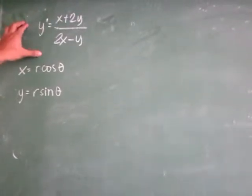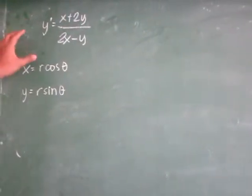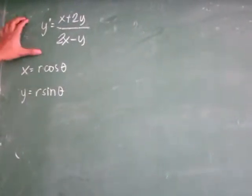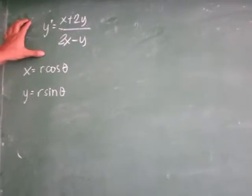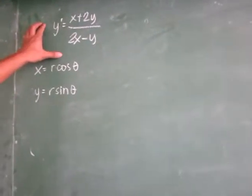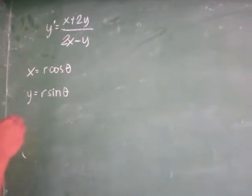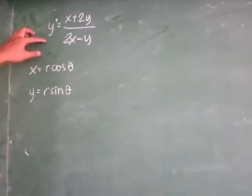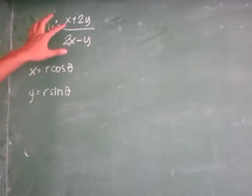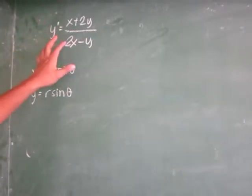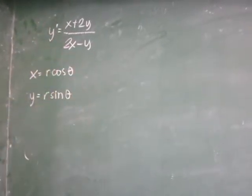This is number 42 of Wiley's Advanced Engineering Mathematics on page 33. As you can see, y' is equal to x plus 2y over 2x minus y.